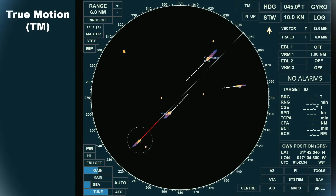Let's examine this scenario on the radar display. The radar is set to true motion with a north-up orientation, and is in sea-stabilized mode, displaying true vectors. If you are not familiar with stabilization modes or the difference between true and relative vectors, please check the link in the description for more details.